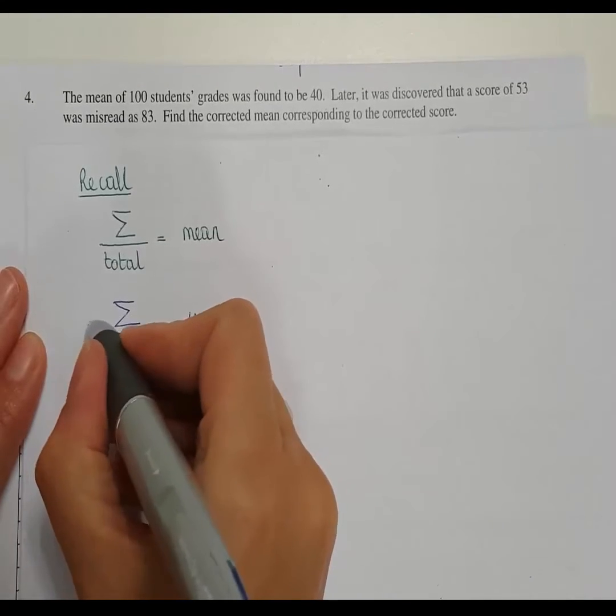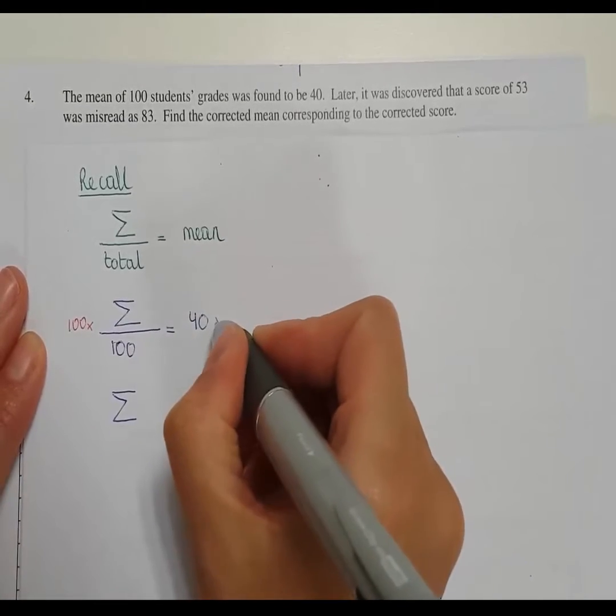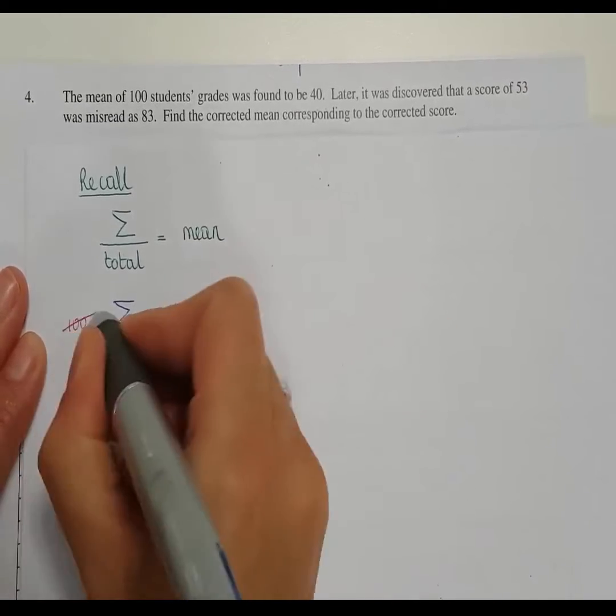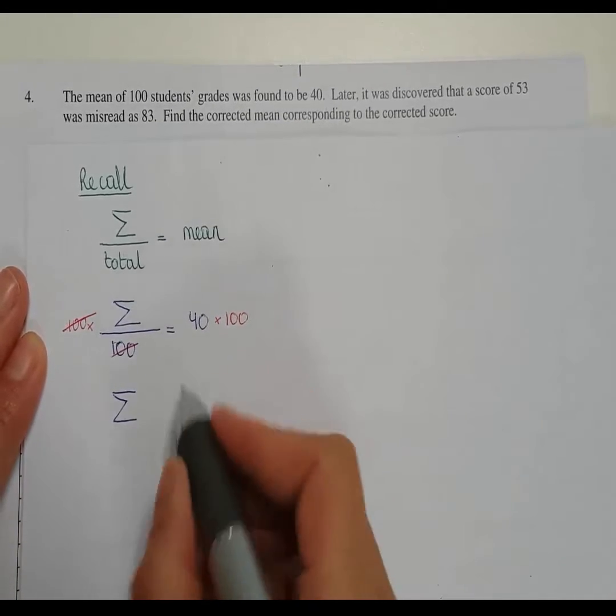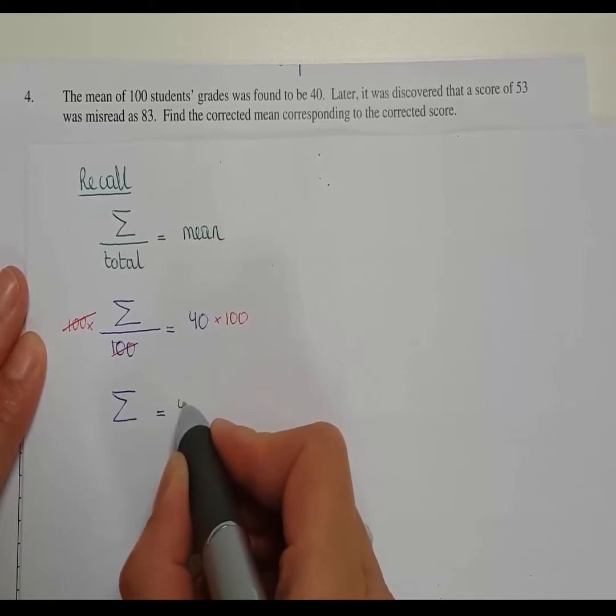We will multiply by 100 on this side and multiply by 100 on that side. So we get the sum just by itself. So the sum equals 4,000.